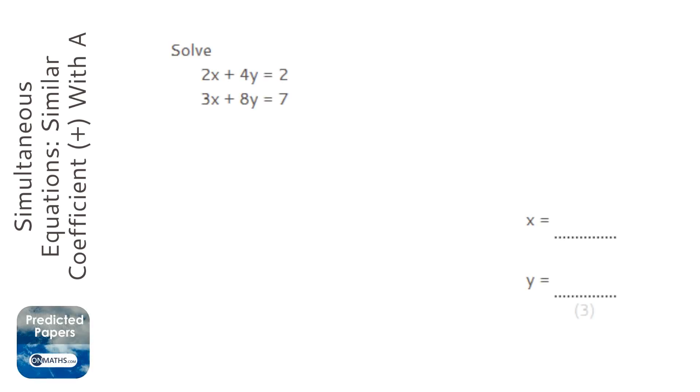Okay, so we're asked to solve these two equations, and this is simultaneous equations. But the issue we have is that we don't have a letter with the same coefficient. We've got 2 and 3 for the x's, and 4 and 8 for the y.